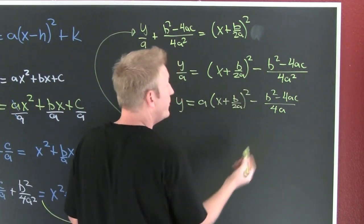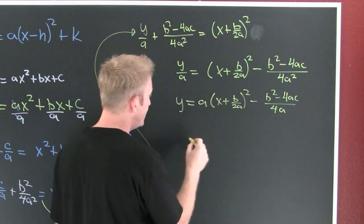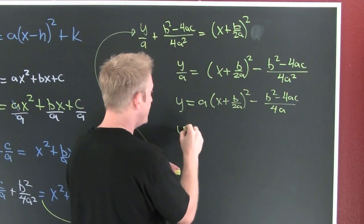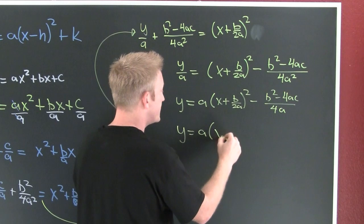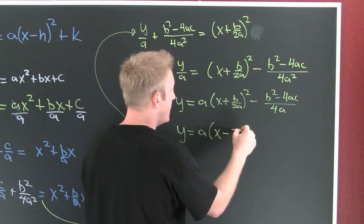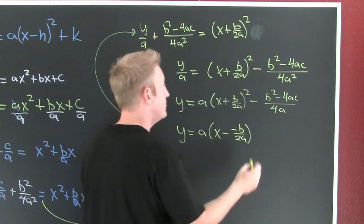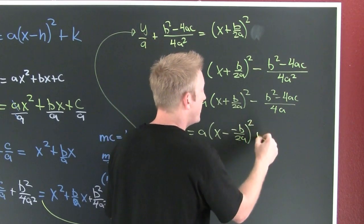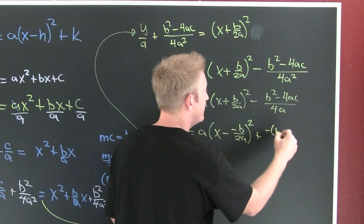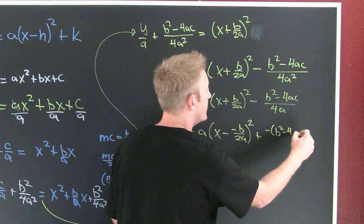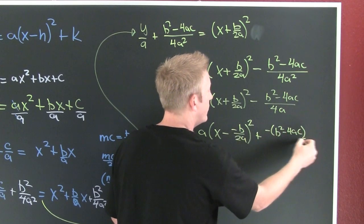...b over 2a squared minus b squared minus 4ac over 4a. So then we're in preferred form. Here we see, if we were going to write this, this is going to be y is equal to a times x minus, minus b over 2a squared, plus a minus b squared minus 4ac over 4a.